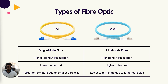The second type is multi-mode fiber, or MMF. Multi-mode fiber cables have a larger internal core, about 50 to 100 microns. This larger core allows multiple rays of light to be sent along the cable at the same time. However, it also allows the light to bounce around more, which diffuses the light and reduces the maximum length of the cables.